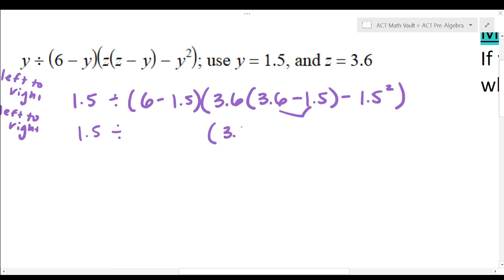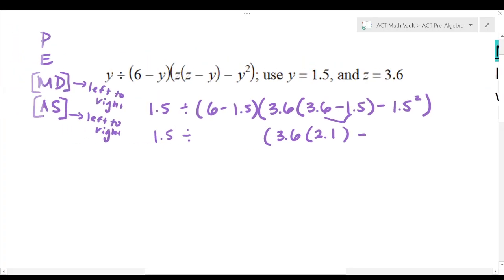So I'll bring down the 3.6, and then we'll keep this in parentheses. That's going to be 2.1 minus. And then I have an exponent. So in the hierarchy here, I've done the P, right, the innermost P. Then, you know, while we're at it, we could do this right here.